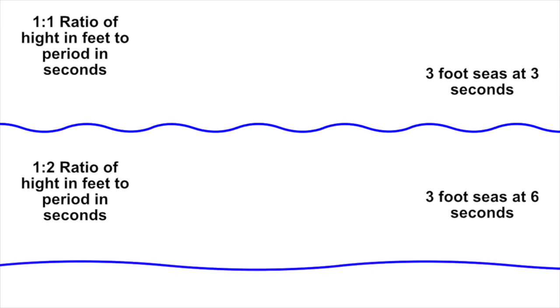The wavelengths on screen are accurate to scale and I want to talk about that just for a second. The 3 foot seas at 3 seconds have a distance between wave crests of just a little over 10 meters. Where the 3 foot seas at 6 seconds have a little over 41 meters between wave crests. That makes a significant difference. I'll show you later how that's calculated. This is accurate to scale along with the size of Chicory.